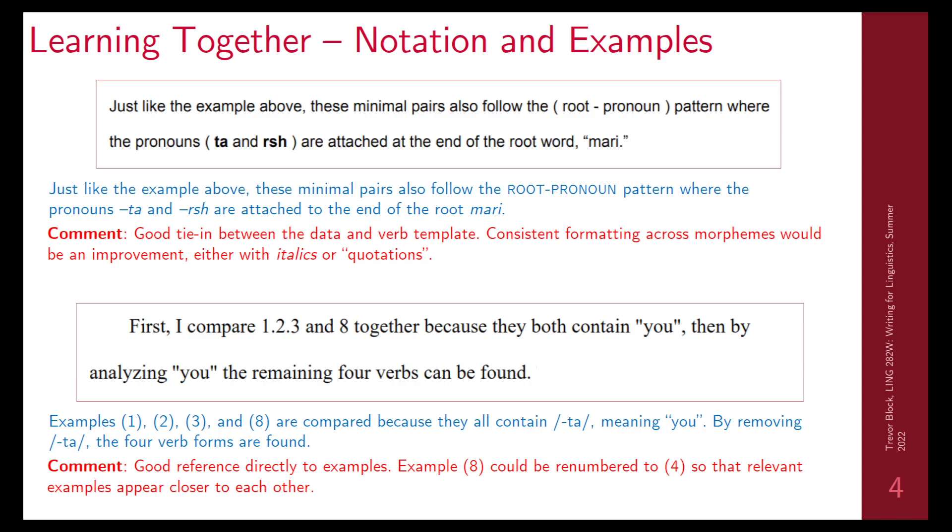In this one, I thought I'd also add in some learning together. So I can take some sentences that point out specific things, look at them, rewrite them into something that's proper notation and then make some comments about them. This was a great tie-in with the verb template and the data. The only thing to improve here would be consistency. We don't really need these brackets around root pronoun. The morphemes ta-ersh and mari are all morphemes, so the convention for them should be similar.